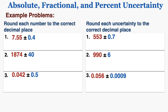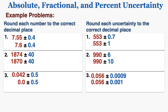I'll close with some rounding problems where I round each number and each uncertainty to the correct decimal place. All I need to do is round each number to the same decimal place as its uncertainty. On the right, because the uncertainties go to lower decimal places than the original numbers, I round those up to the lowest decimal point of each number. And that's what you need to know about the definition of absolute, fractional, and percent uncertainty and how to convert between them.